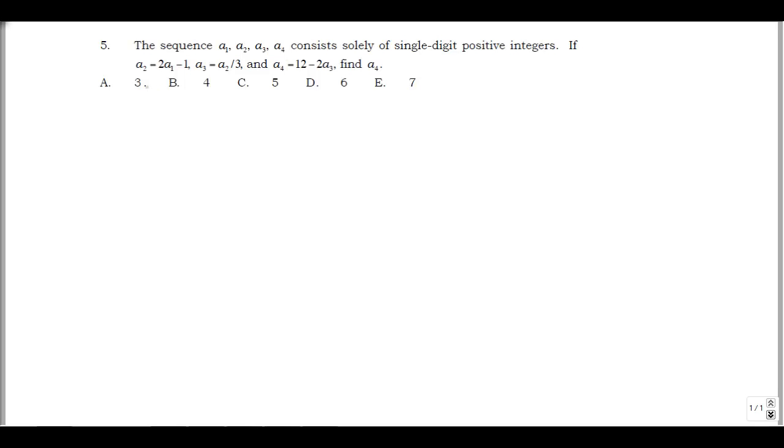And then we have some recurrences, so A2 is 2A1 minus 1, A3 is A2 over 3, A4 is 12 minus 2A3, and we want to figure out what A4 is.